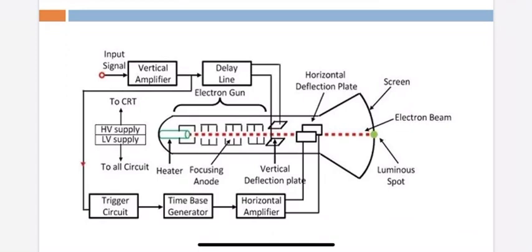Next is the time-base generator. The time-base generator produces a sawtooth waveform. This sawtooth waveform is applied to the horizontal deflection plates. The sawtooth waveform acts like a sweep along the x-axis, sweeping the electron beam horizontally across the screen.